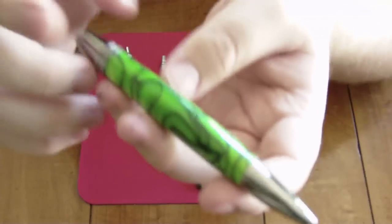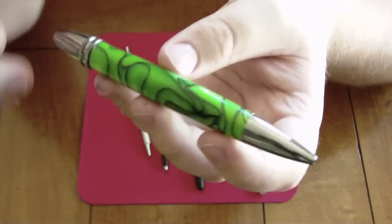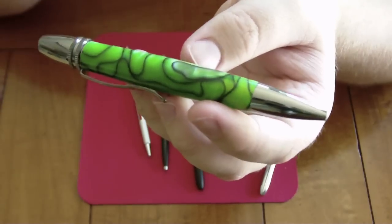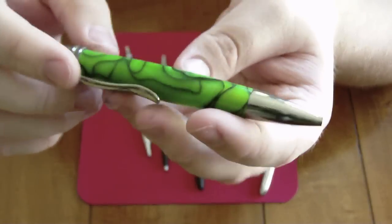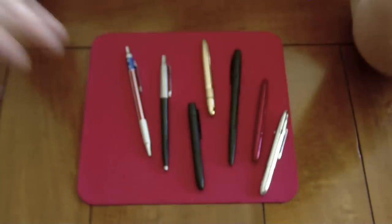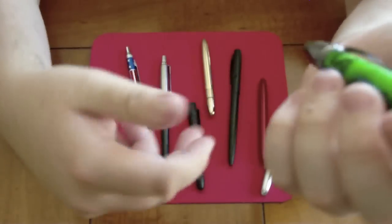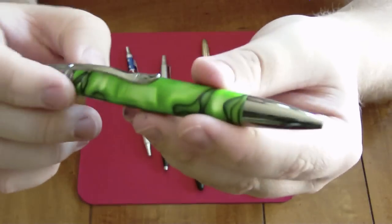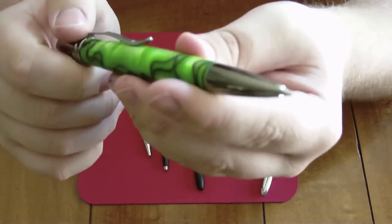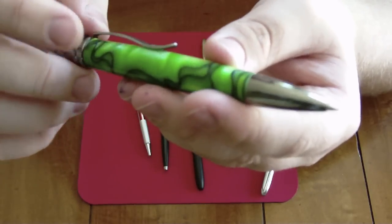Now she took the Fisher space pen refill out of here, which I could understand because it costs about three or $4. But look, I have plenty of refills to choose from. I could probably pop the one out for my red one and put it in here. But the refill that she has in here actually writes very smooth. So I may just hold onto that one.